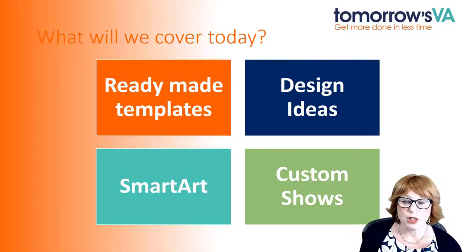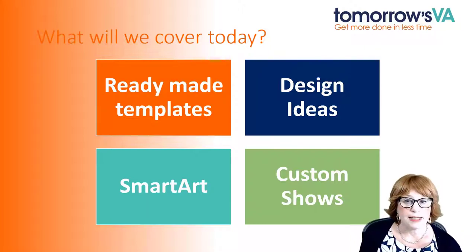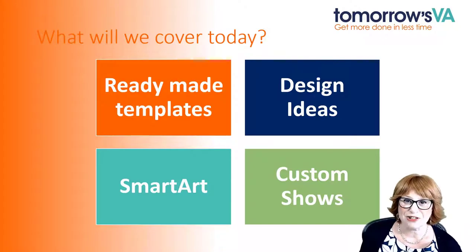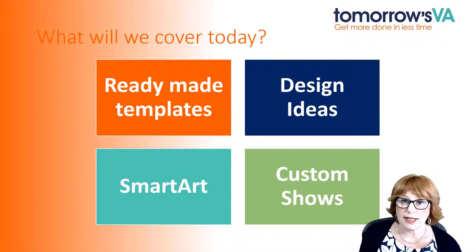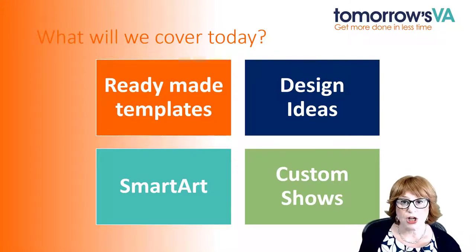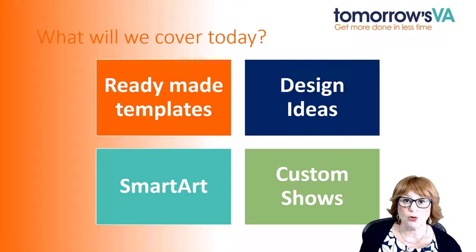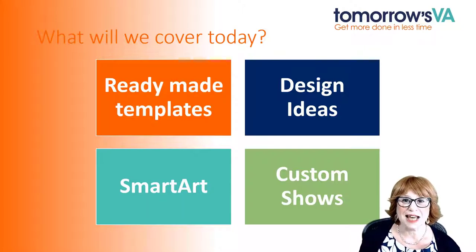We're going to take a look at smart art and three things you can use it for: one, to banish boring bullet points; two, to create a hierarchy organisational chart; and three, to create a timeline. And finally we're going to finish up with custom shows — where you have a master slide deck with lots of slides in it, and when you turn up to present you find you only need one section. We'll see how you can quickly edit that show to display only the slides you need.